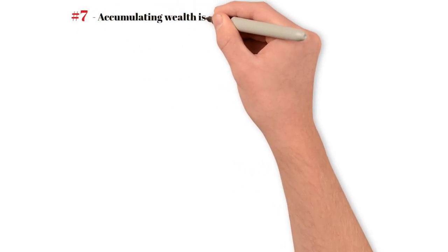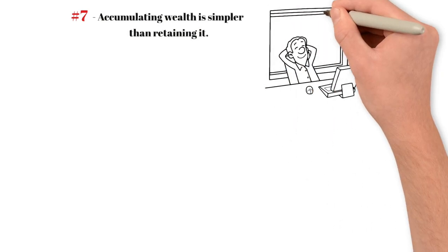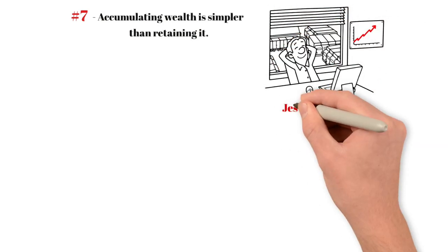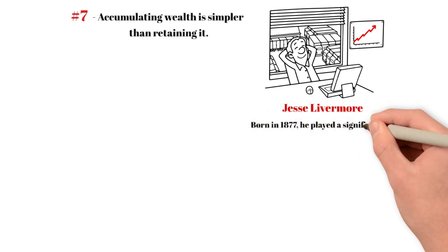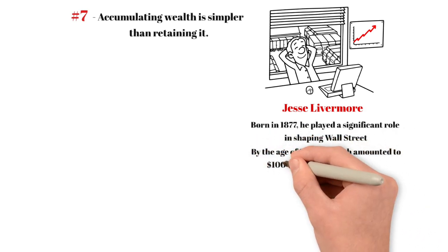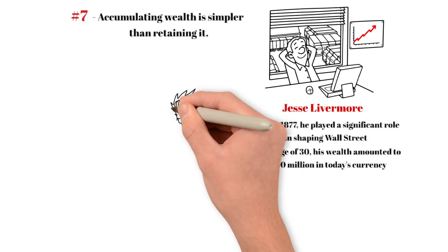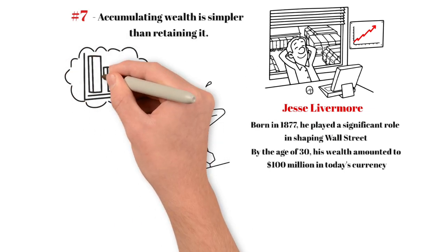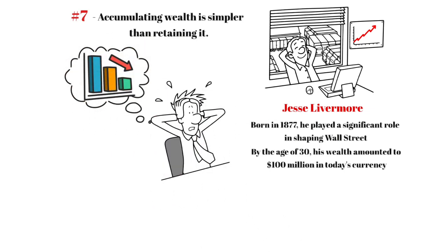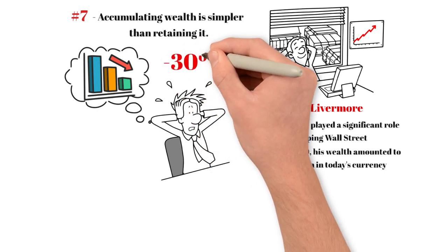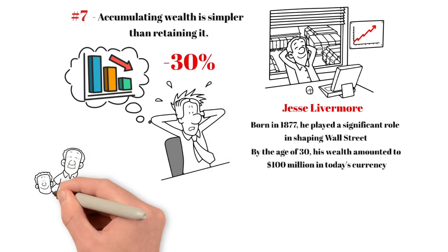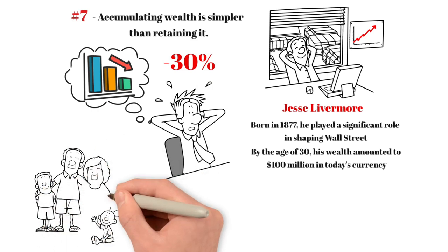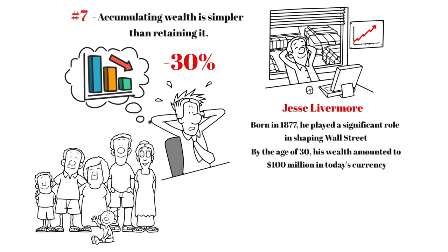Number seven: Accumulating wealth is simpler than retaining it. There were few better stock market traders in early 20th century America than Jesse Livermore. Born in 1877, he played a significant role in shaping Wall Street. By the age of 30, his wealth amounted to $100 million in today's currency. Just before the 1929 market crash, Livermore made a pivotal decision. He took a short position, betting that stocks would decline. His prediction proved accurate, with the market losing a third of its overall value. While others faced financial ruin and reports circulated of bankrupt investors jumping from office windows, Livermore went home to his family with remarkable news. He had just earned the modern equivalent of $3 billion.